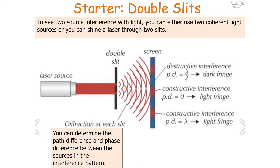You can look at the pattern formed on the screen and determine the path difference and the phase difference between the sources at each part of the screen. For a bright fringe, constructive interference takes place, so the path difference is either 0 or a multiple of the wavelength — 0, 1 wavelength, 2 wavelengths, 3 wavelengths, etc. Destructive interference forms the dark fringes, and that happens where the path difference is half a wavelength or an odd multiple of half a wavelength — 0.5, 1.5, or 2.5 wavelengths.